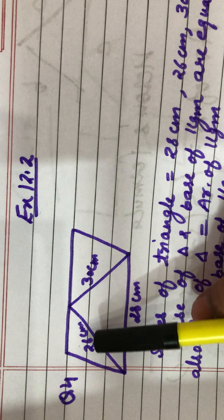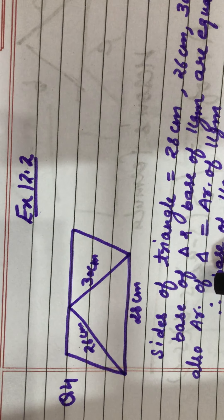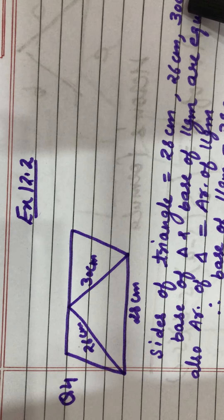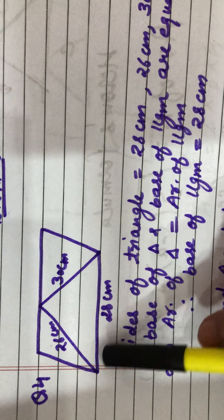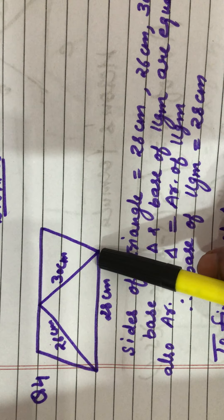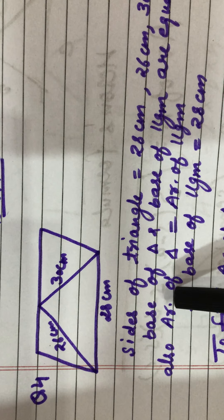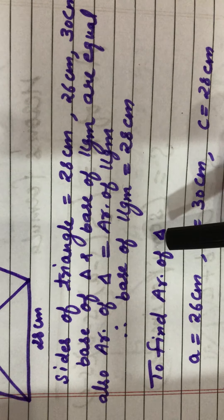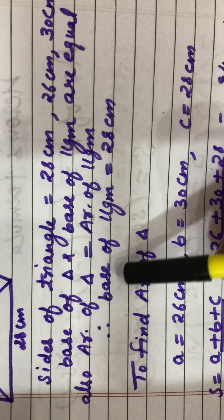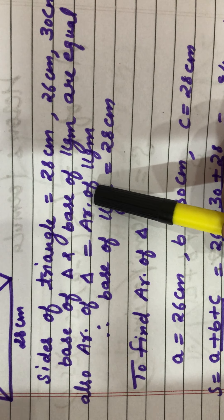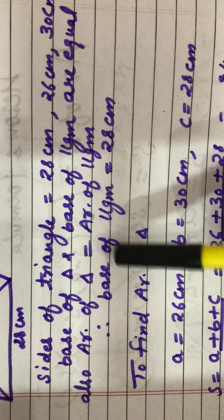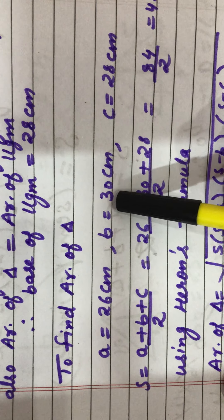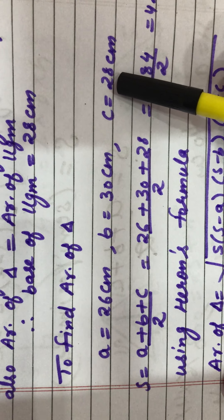The sides of the triangle are 28 cm, 26 cm, and 30 cm. The base of the triangle and the base of the parallelogram are the same: 28 cm. It is also given that the area of the triangle and the area of the parallelogram are equal. So first we have to find the area of the triangle, then we can easily find the area of the parallelogram since both are equal.